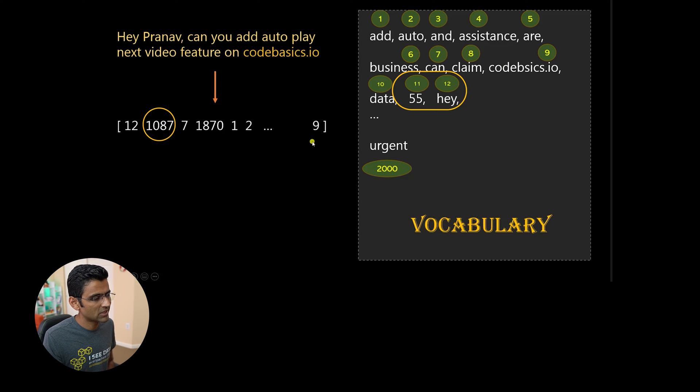You see hey is 12. Pranav is 187, it's not visible somewhere hidden in three dots. Ken is 7. You see Ken is 7 and so on.